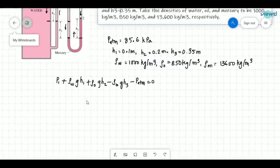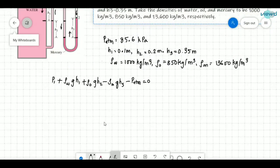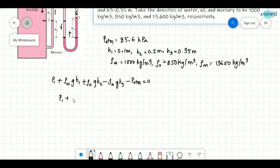And now we need to just substitute these values. So P1 we need to find that. And rho W density of water is 1000 kg per meter cube into 9.81 is acceleration due to gravity and H1 is 0.1 meter. Plus oil density is 850 into acceleration due to gravity 9.81 into H2. H2 is 0.2.